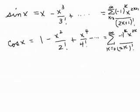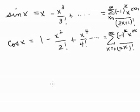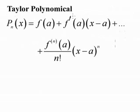This Maclaurin series is also called a power series. Sine of x is just x minus x cubed over 3 factorial plus x to the 5th over 5 factorial and so on — the sum from k equals 0 to infinity of negative 1 to the k times x to the 2k plus 1 over 2k plus 1 factorial. Similarly, cosine of x is 1 minus x squared over 2 factorial plus x to the 4th over 4 factorial minus and so on, which gives us the sum from k equals 0 to infinity of negative 1 to the k times x to the 2k over 2k factorial. We now know the Maclaurin series for e to the x, sine x, and cosine x.